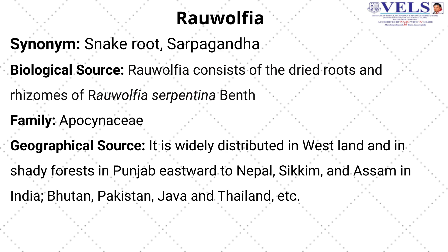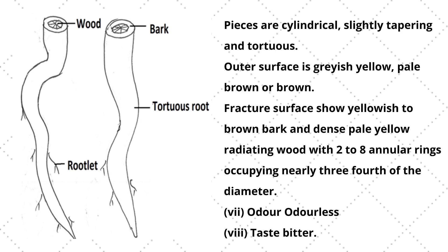Rauwolfia is widely distributed in Nepal, Sikkim, Assam, India, Bhutan, Pakistan and Thailand. Regarding cultivation, both seed propagation and vegetative propagation methods can be followed, but the yield is greater with seed propagation, so that method is mostly followed. The root and rhizome portion must be collected from three-year-old plants.